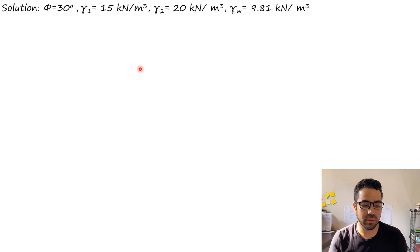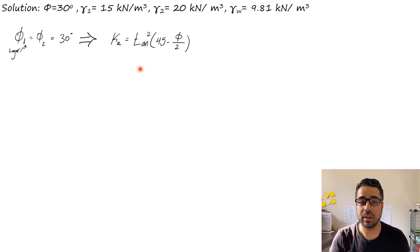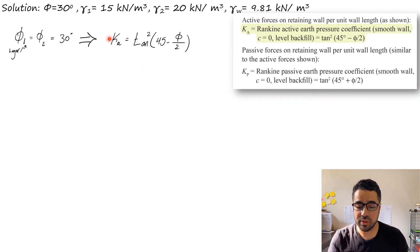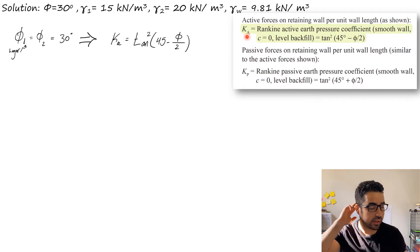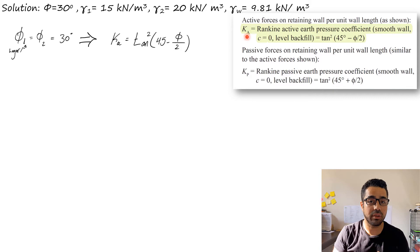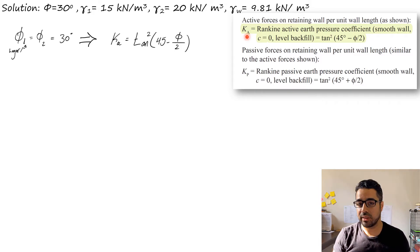We are looking for σh, the horizontal stresses on the wall. First, we write down what is given: φ, γ1, γ2, γ_water. Then we find Ka, the active earth pressure coefficient — sometimes called the Rankine coefficient — from the reference manual. We are using the active, not passive, and there is also K-naught for the at-rest condition. If they don't tell you what type of pressure, by default it is active earth pressure.